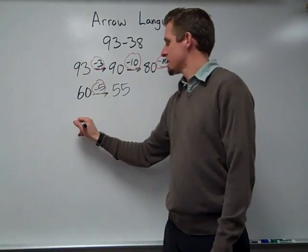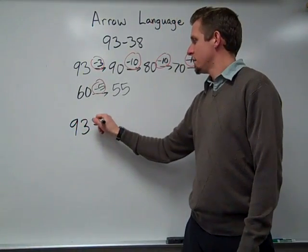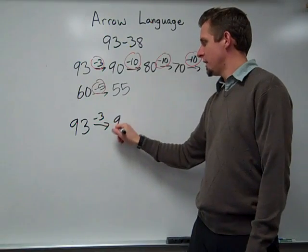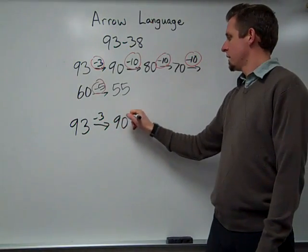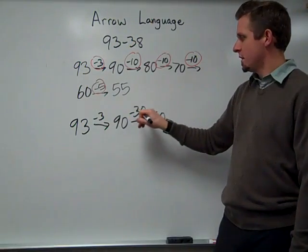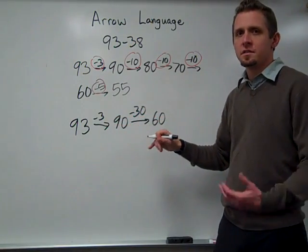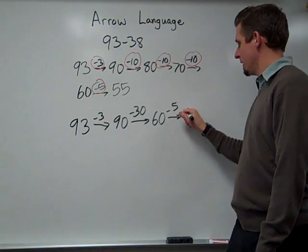Some students may solve it like this, taking less jumps. So they would start at 93, take away 3 to get to 90. And then they could take 30 away to get to 60. They've taken away 33 so far. They still need to take away 5 more to get to 55.